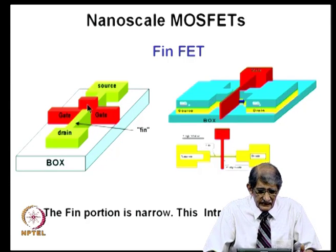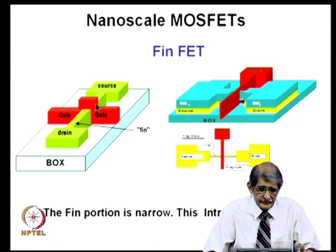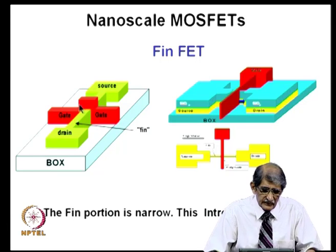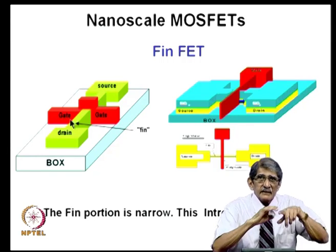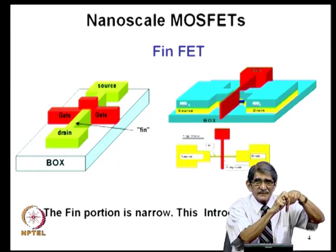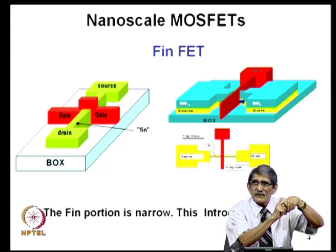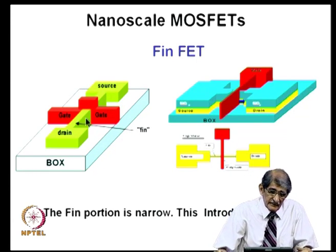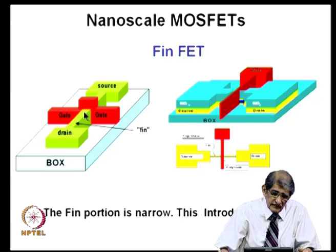The inversion layer is formed just below the gate. The channel length is from here to here — wherever the gate is, below that there is a channel. The width is whatever portion surrounds that channel. Sometimes they call it an all-round gate because the gate is present from all three sides. As I have already pointed out, there is a thickness associated with this structure.